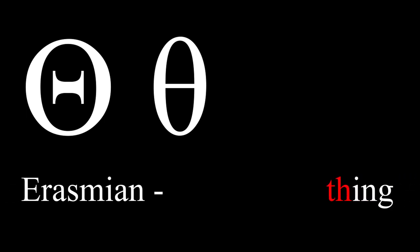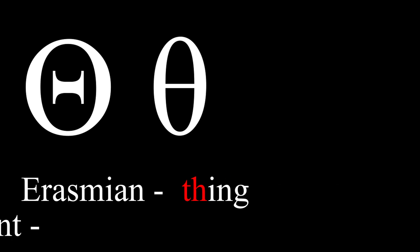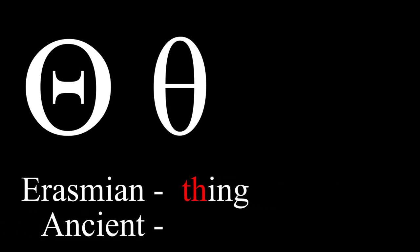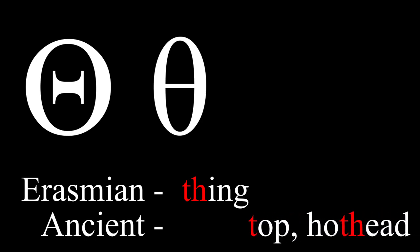This next letter is eta. It is always a long vowel, pronounced like the a in 'hate.' This is theta. In Erasmian pronunciation, it is pronounced like the 'th' in 'thing.' In ancient pronunciation, however, it is pronounced like a t with an h after it — some examples are the t in 'top,' or the 'th' in 'hot head.'